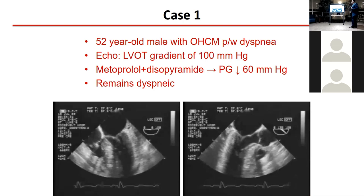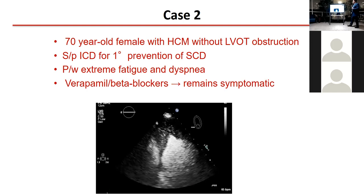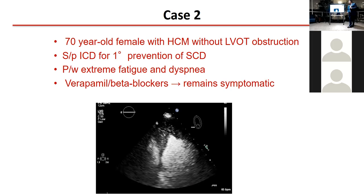You have systolic anterior motion. The second case: a 70-year-old female with HCM, no obstruction of the outflow tract. She had a previous ICD for primary prevention and presents with extreme fatigue and shortness of breath. She was tried on medical therapy but remains symptomatic. She has apical and mid-HCM, and if you look at the cavity of the left ventricle, the size is very small.